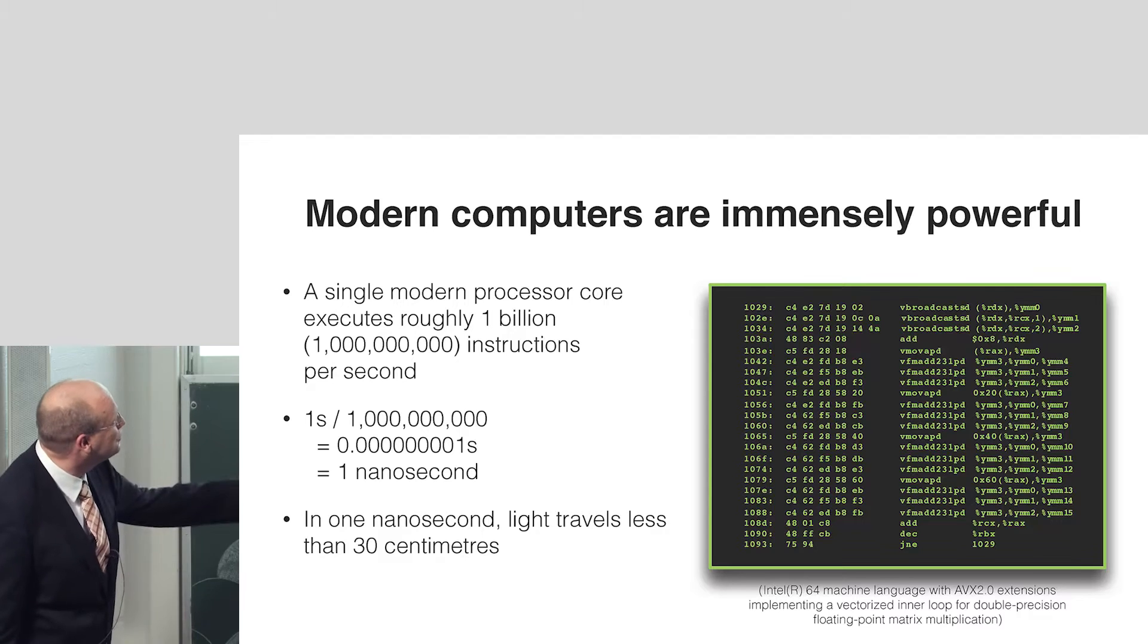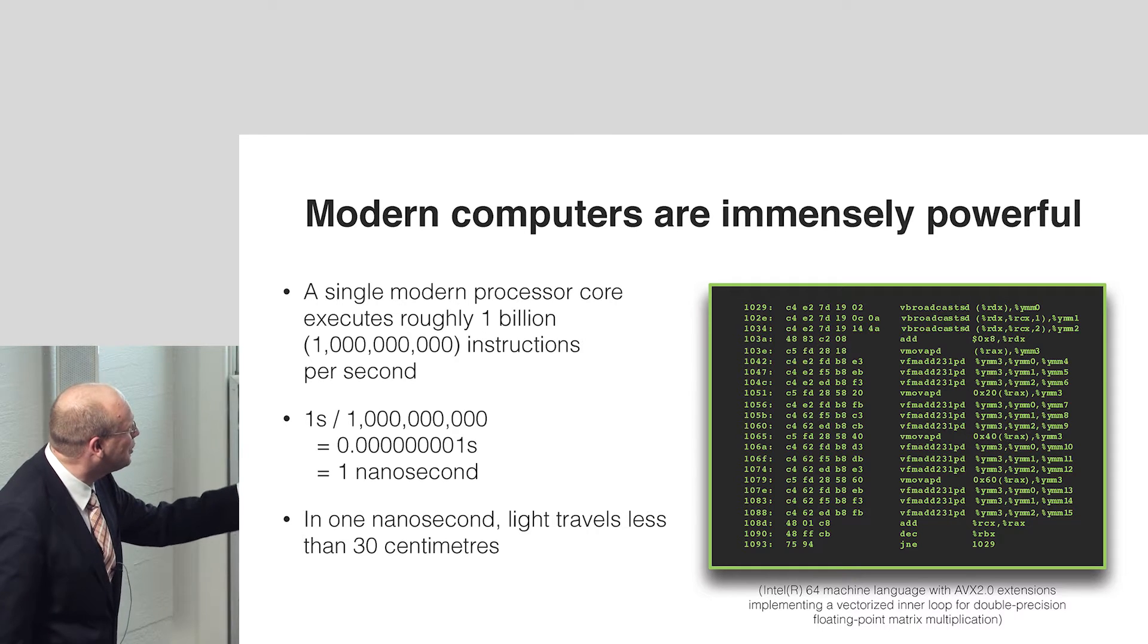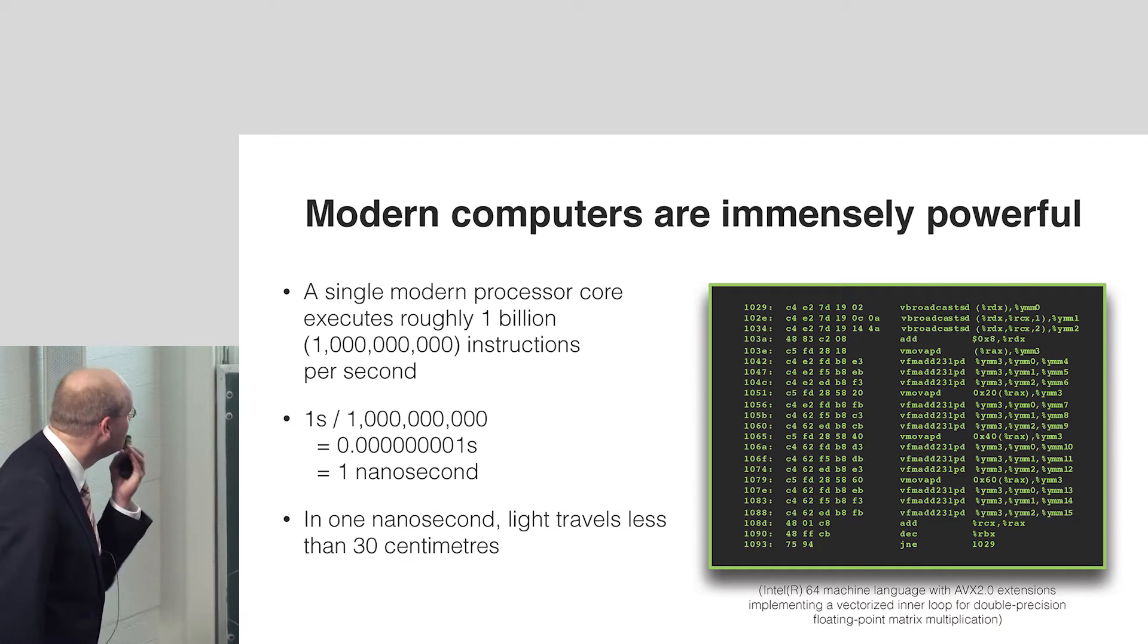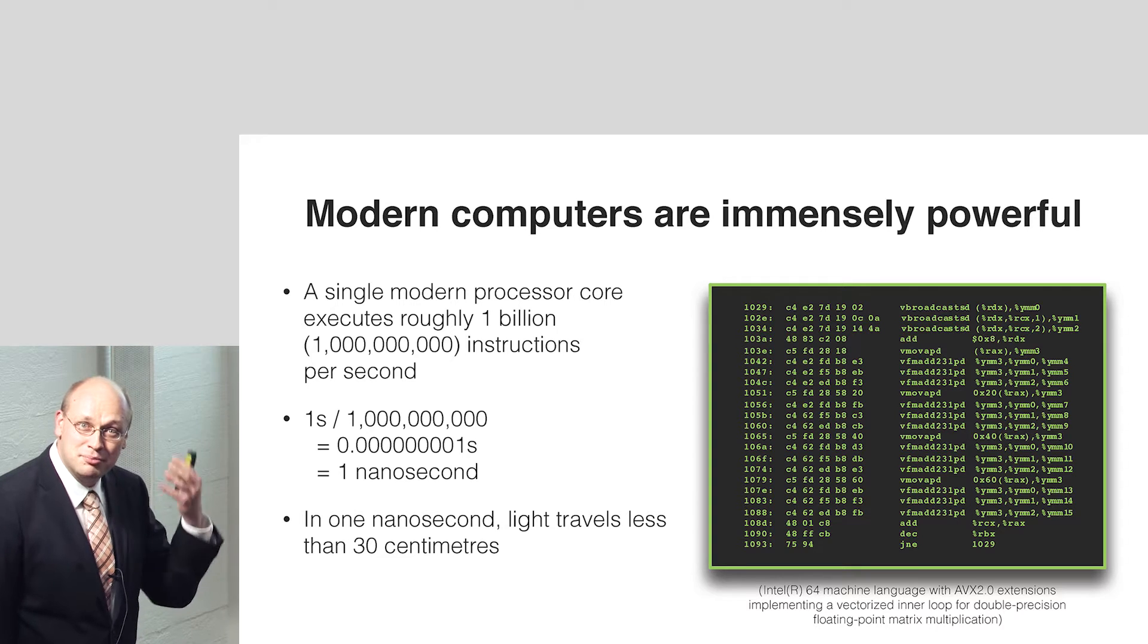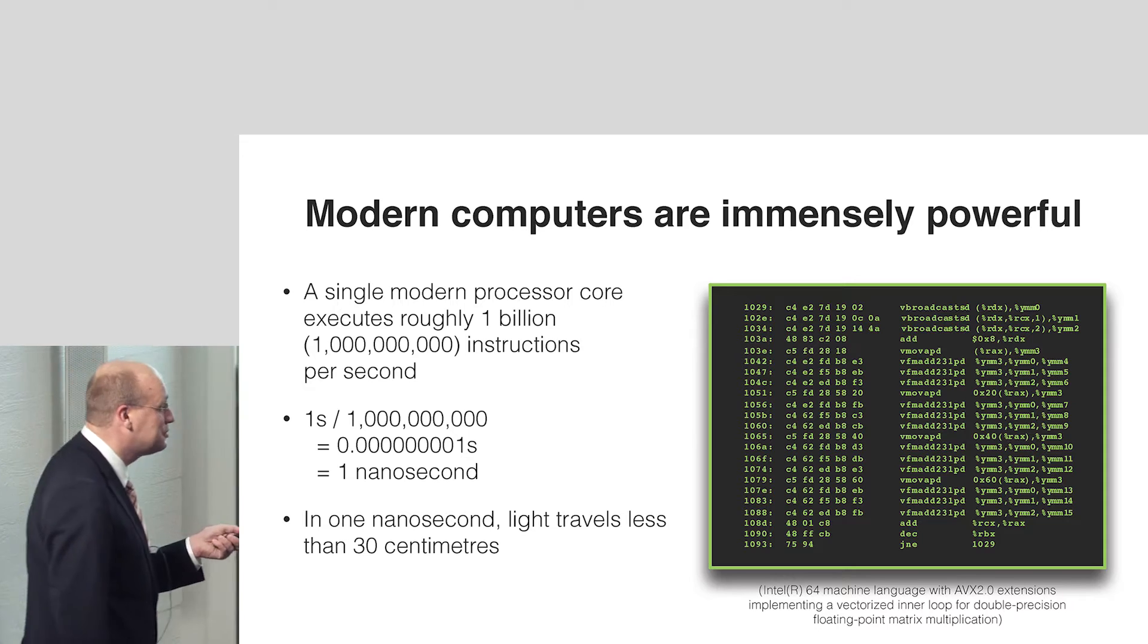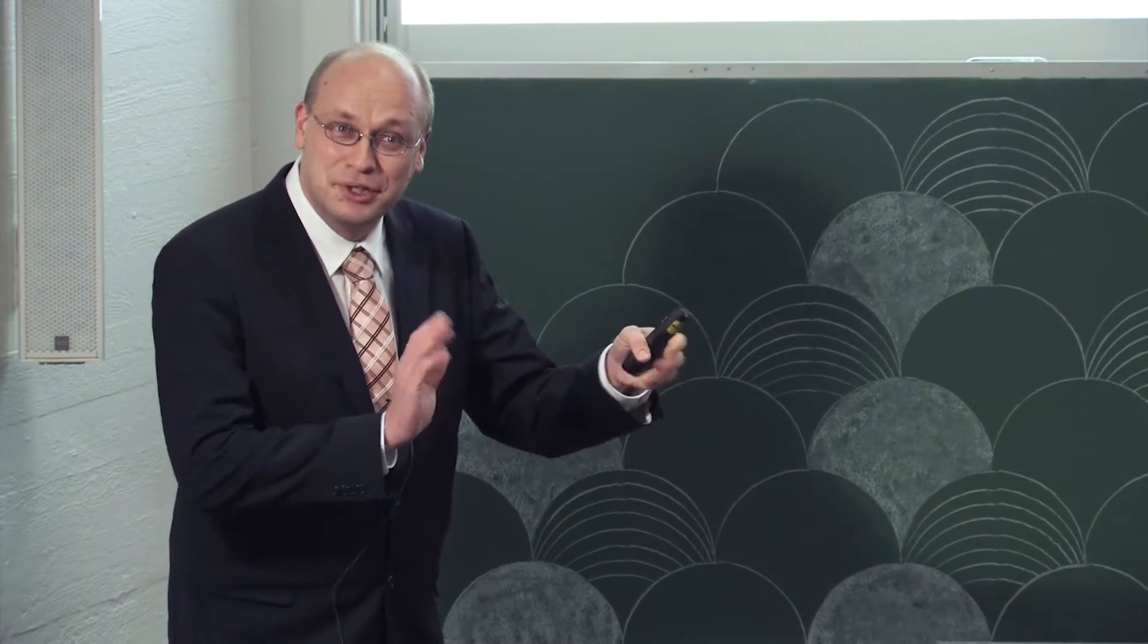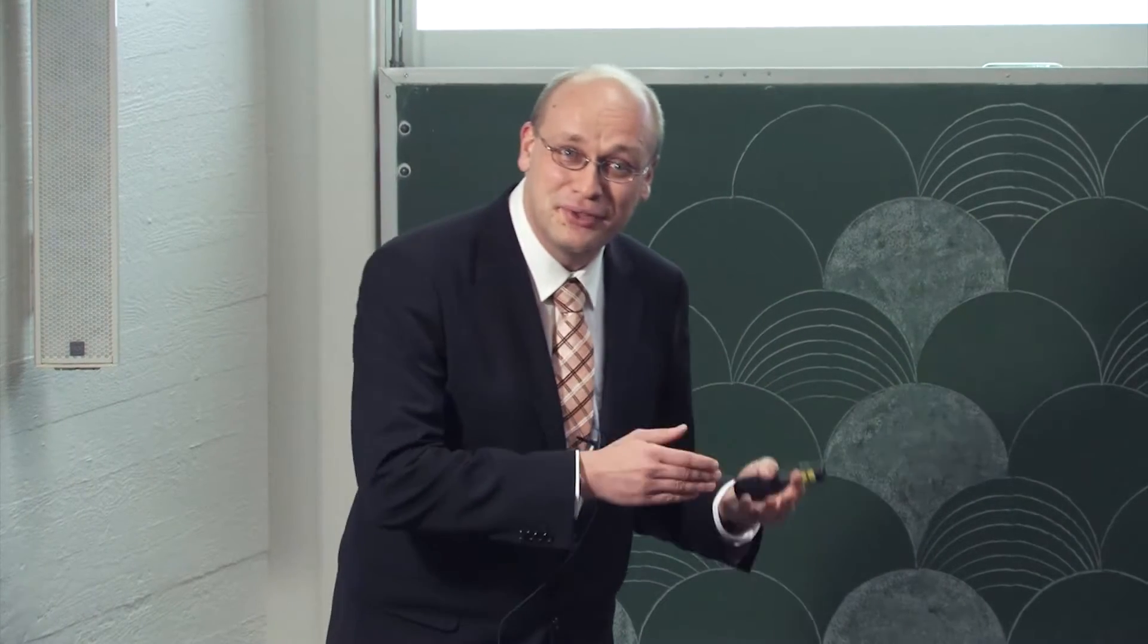So what is an instruction? If you're a computer aficionado, you can see here some machine language. There are these little operations that take place literally billions of times per second inside a single compute core. One billionth of a second is in physics terms called one nanosecond. So in one nanosecond, if you operate at the speed of light, the distance that you travel is 30 centimeters.